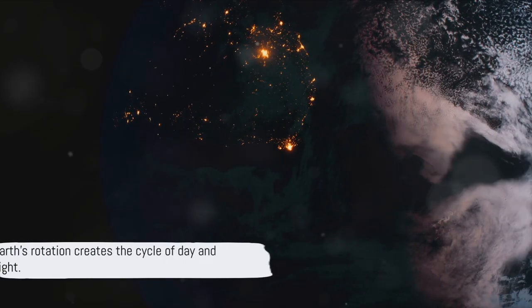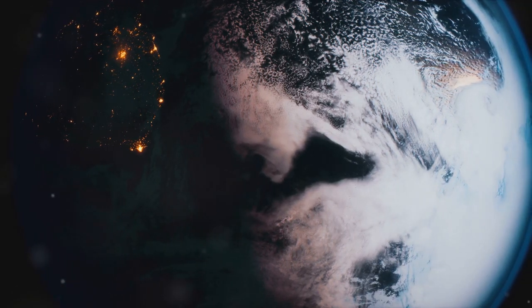This 24-hour spin creates day and night. As Earth rotates, sunlight illuminates one half, while the other experiences darkness.